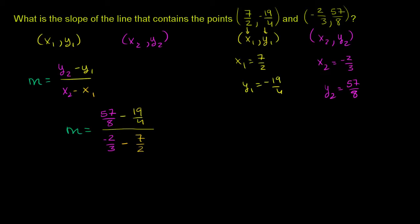So let me just do it straight up. A common denominator over here would be 8. So this is 57/8. And then if I were to write -19/4 with a denominator of 8, I multiplied 4 times 2 to get 8, so I have to multiply 19 times 2, so I get 38.